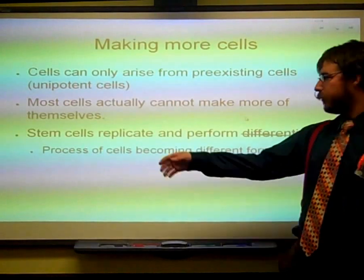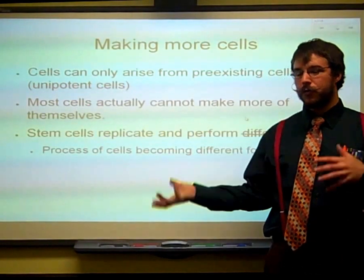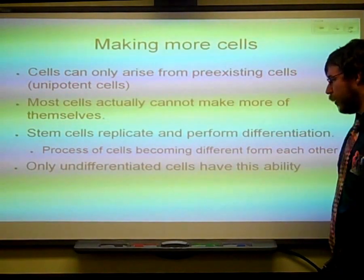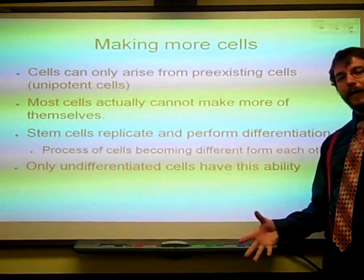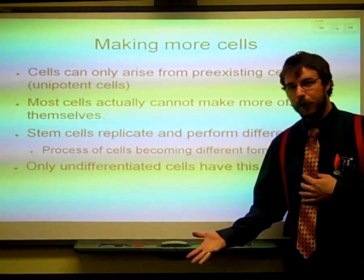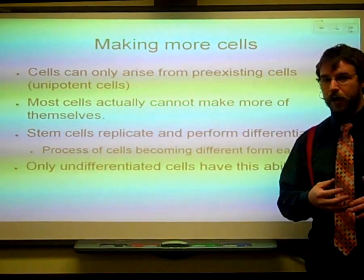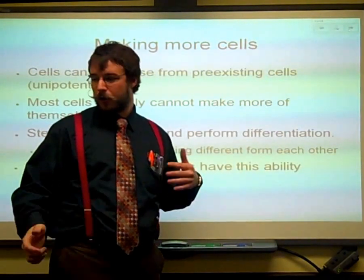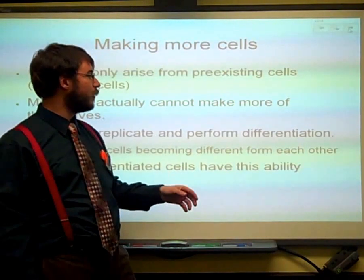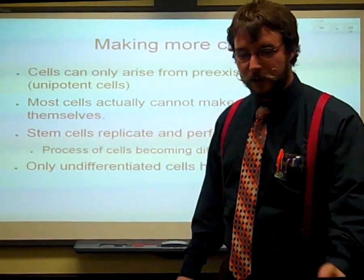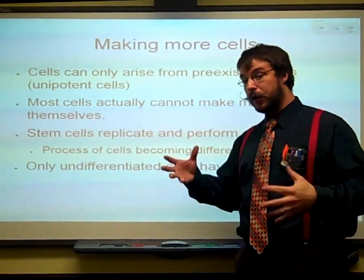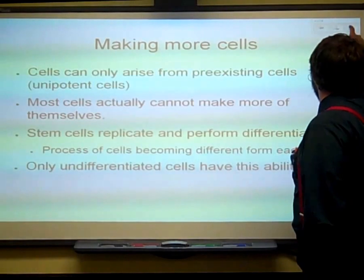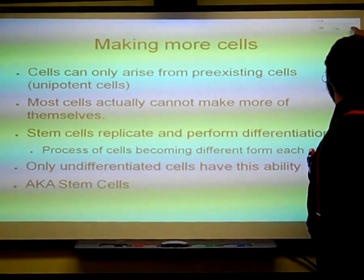There are certain types of cells called stem cells. They replicate and go through differentiation, where they become different from each other. Only undifferentiated cells have the ability to differentiate. Once my liver has become a liver cell, it can no longer turn into something else. Once skin has become a skin cell, it can't go back. Some scientists have found ways to induce a cell into becoming undifferentiated again, but that involves a lot of biochemistry we won't go into.